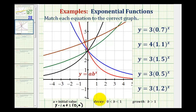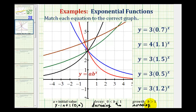If the base b is between zero and one, we have exponential decay, which means the function would be decreasing — from left to right, the graph would be going downhill. And if b is greater than one, we have exponential growth, which means the function is increasing, or going uphill from left to right.